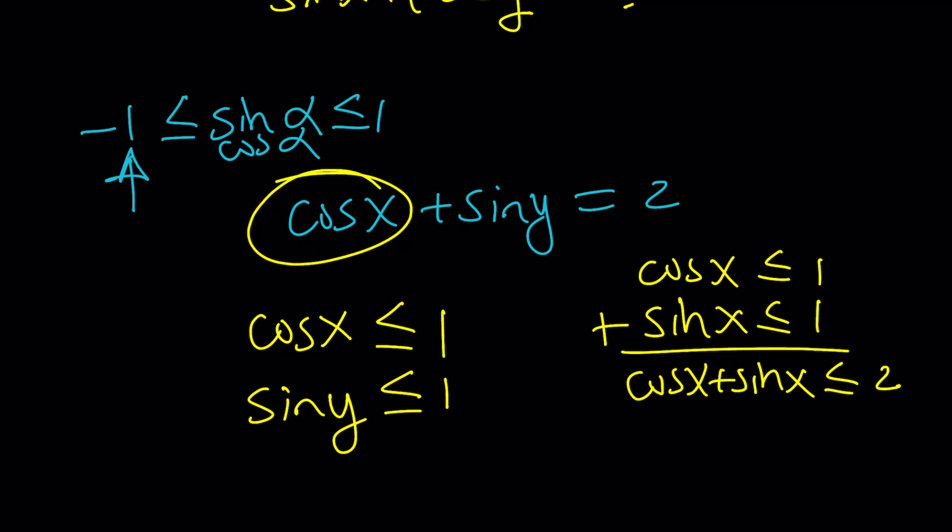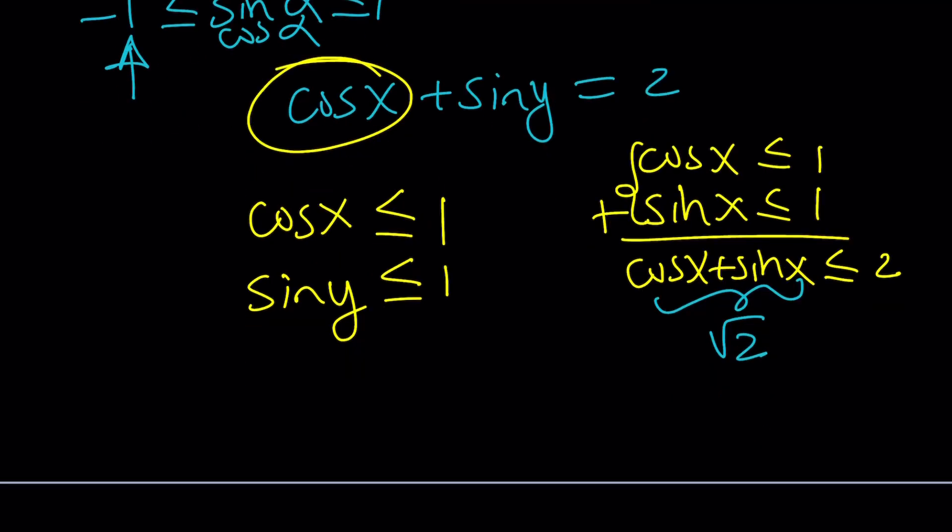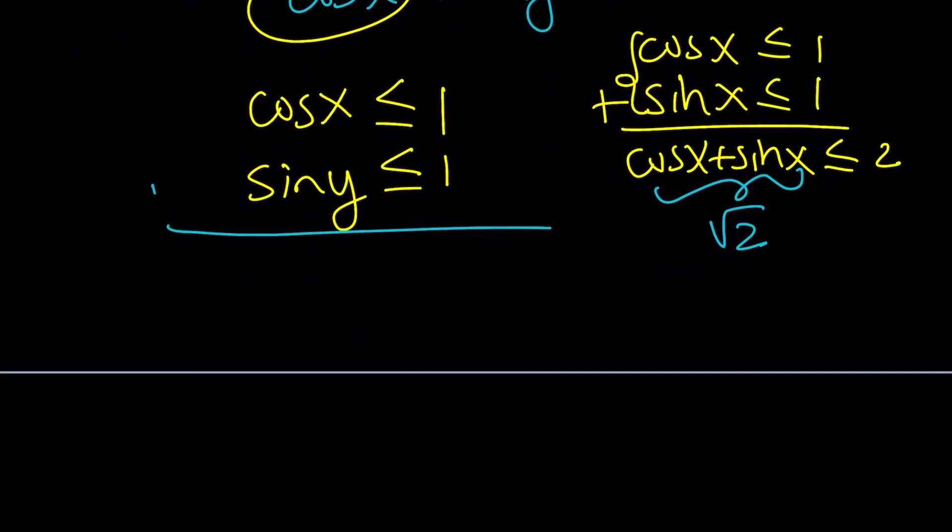Yes. This is kind of true, but this is not a strict inequality. The problem is cosine x plus sine x cannot be 2 because these two are not independent. The actual maximum value for this sum is actually square root of 2, which you can find by using a lot of different methods. Anyways, that's a different story. But we can add these because x and y are independent. So from here, cosine x plus sine y becomes less than or equal to 2.